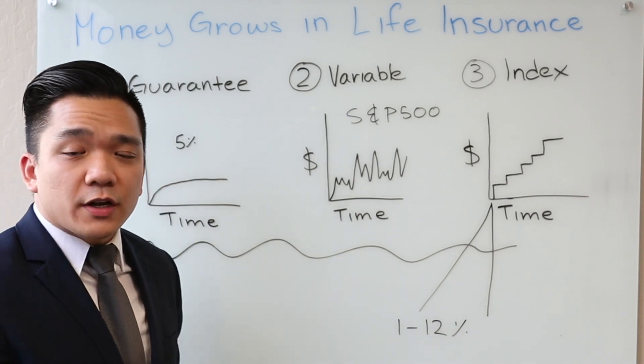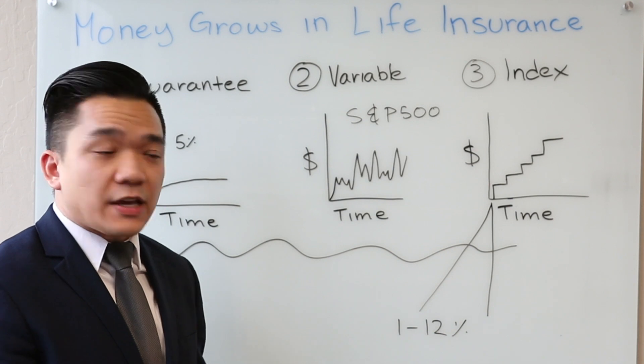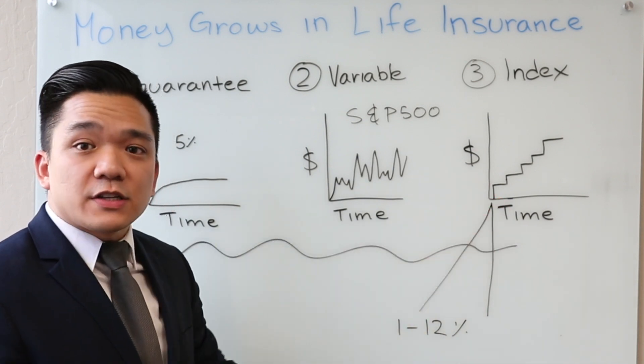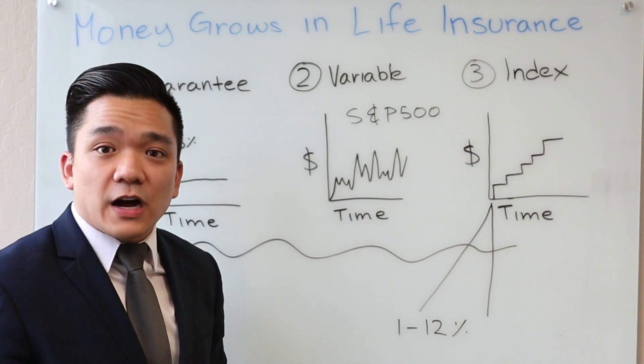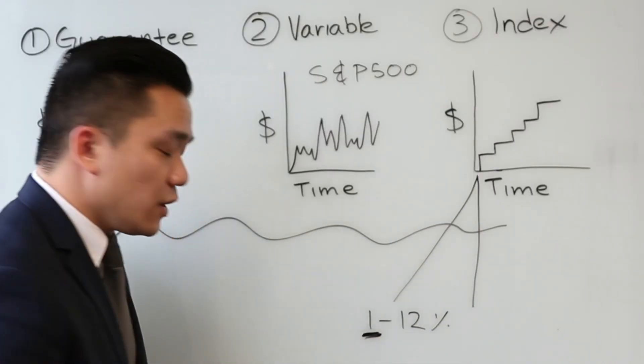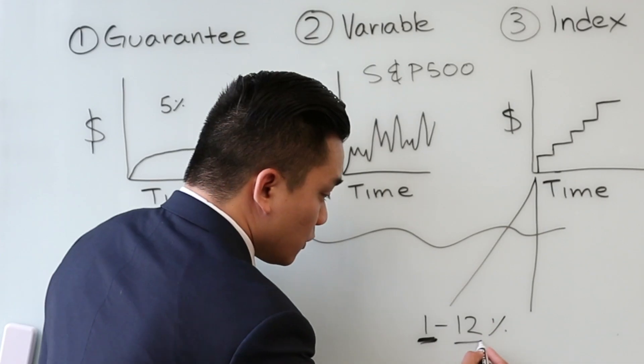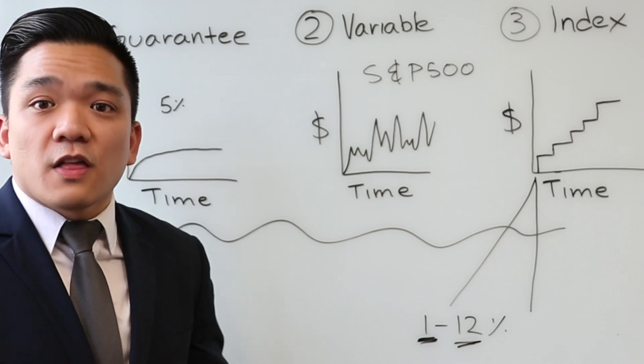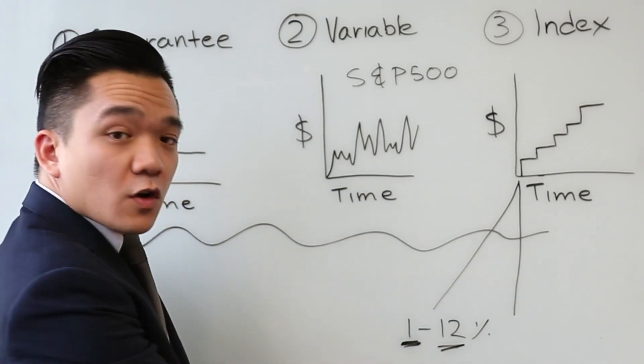Meaning that if the market does anything between 1 and 12%, that's exactly what you get. If it does 10, you'll get a 10% growth. If it does 8, you'll get an 8% growth. However, if the market does negative 5, the lowest you can ever go is 1%. If the market does 20%, the most you can ever get is 12%. That's what it means to be indexed.